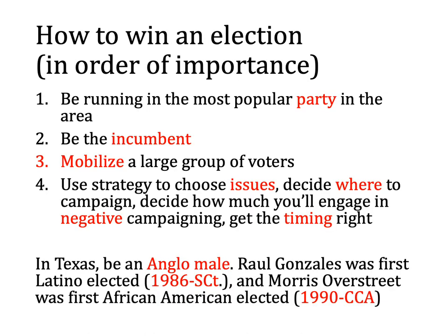If you decide you want to win an election, you will have better success if you follow these rules: run in the most popular party in the area, be the incumbent, be able to mobilize large groups of voters, use strategy to choose what issues to pursue and where to campaign, decide how much to engage in negative campaigning, and get the timing right. In Texas, you'll have a better chance if you're an Anglo male. Raul Gonzalez was the first Latino elected to a statewide office in 1986, and Morris Overstreet was the first African American elected to a statewide office in 1990.